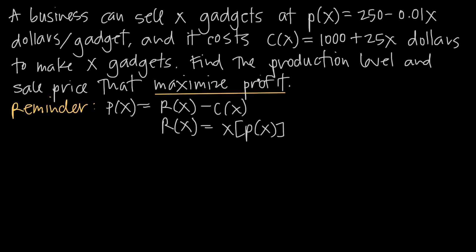Because we need to maximize profit, we're going to need a function for profit. Profit is always equal to revenue minus cost. For example, if I build something and it costs me $10 to make and I sell it for $15, my revenue is $15 and my cost is $10. So $15 minus $10 gives me $5 profit. Profit is always revenue minus cost.